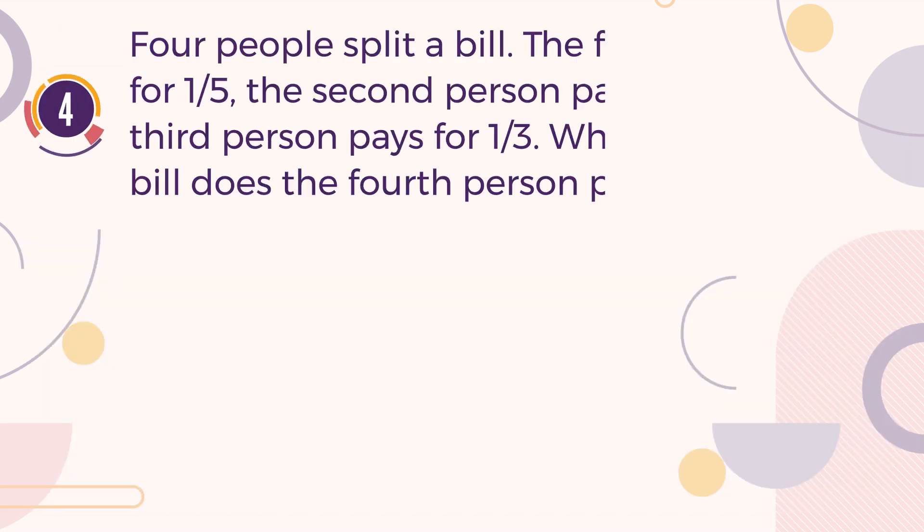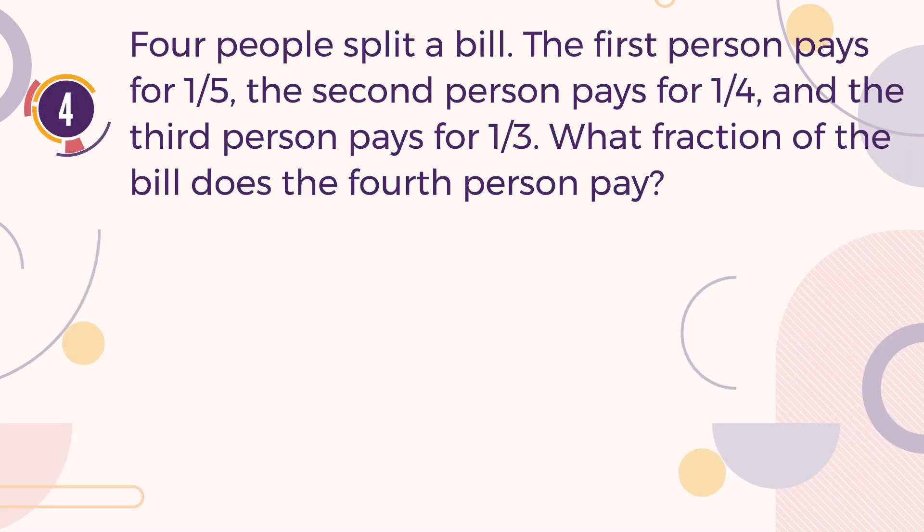Number 4. Four people split a bill. The first person pays for one-fifth, the second person pays for one-quarter, and the third person pays for one-third. What fraction of the bill does the fourth person pay? A. 13/60. B. 47/60. C. A quarter. D. 4/15.